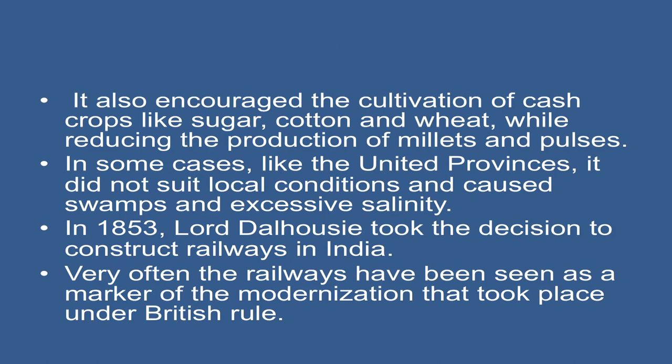It did lead to great prosperity in commercial agriculture in limited enclaves, especially in the canal colonies of Punjab, but it was confined to a smaller number of already well-off farmers who could pay the high water rates. It also encouraged the cultivation of cash crops like sugar, cotton, and wheat, while reducing the production of millet and pulses. In some cases, like the United Provinces, it did not suit local conditions and caused swamps and excessive salinity.